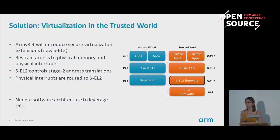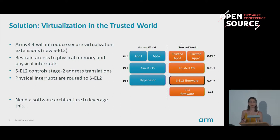Instead, trusted OSes will access intermediate physical addresses translated by the second stage MMU in the Secure EL2 firmware — two stages of translation, so Secure EL2 controls exactly what physical memory the trusted OS can access. Physical interrupts will also be routed to Secure EL2 instead of Secure EL1, so the Secure EL2 firmware controls them and can re-inject them as virtual interrupts into the trusted OS if needed.